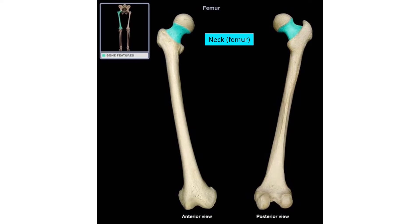Below the head is the neck of the femur. Compared to the anatomical neck of the humerus, which is narrow, the neck of the femur is a very evident structure. So we have the head attaching to the neck of the femur.